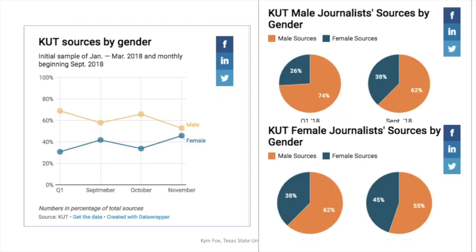Looking at their overall numbers — we talked about the gender issue — going back to the thought about newsrooms not being terribly diverse: one thing the KUT study did was look at male journalists versus female journalists and who they were talking to. They found that male journalists talk to more male sources. Interestingly, female journalists spoke with a larger percentage of female sources than male journalists did, but they still didn't reach source parity — they still spoke with more male sources. Those numbers were much more equalized when they did the revisit later in the year.